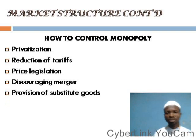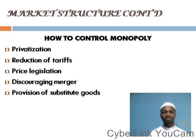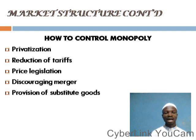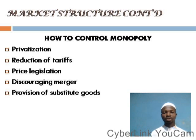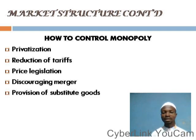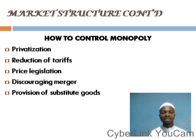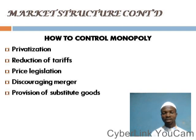Now let's look at how to control monopoly. We have a number of ways through which monopoly power can be controlled. These include: privatization, reduction of tariffs, price legislation, discouraging mergers, provision of substitute goods, and so on. Privatization is one of the government's policies which involves the transfer of government-owned business enterprises to private individuals. The transfer of ownership and control of enterprises held by government into the hands of private individuals is what is known as privatization.